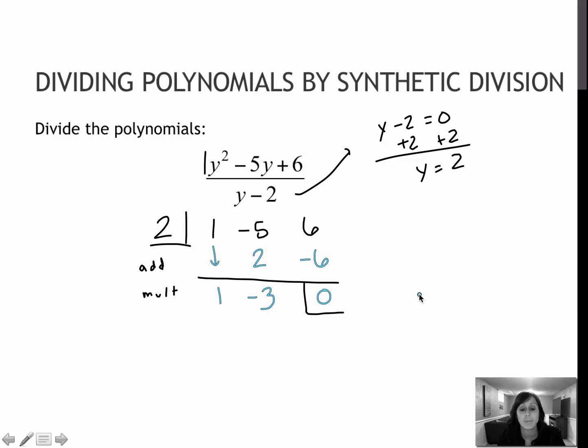I take 2 times negative 3 to get negative 6 and add those values together to get 0, meaning that I don't have a remainder. My solution will start with 1 as a coefficient in front of 1 degree less than my original. So this is y to the 2nd, which means it is 1 y to the 1st, and then minus 3 with no remainder. So it's just y minus 3, which is the same value you got before.